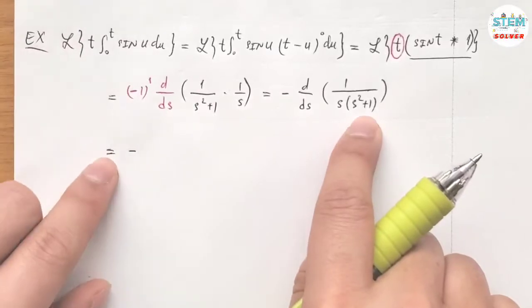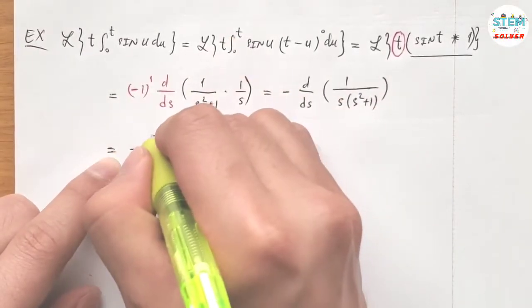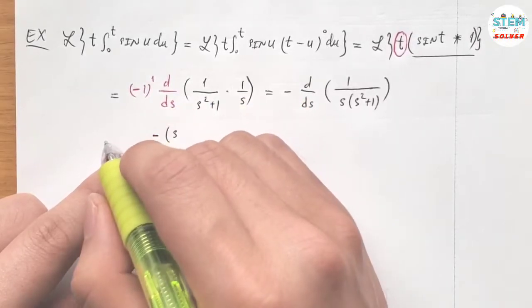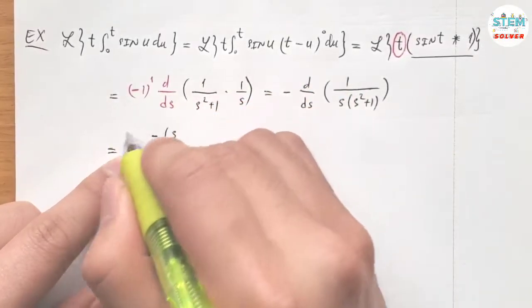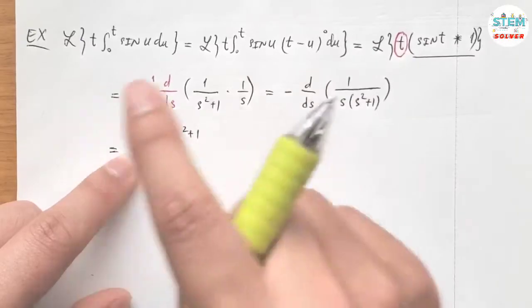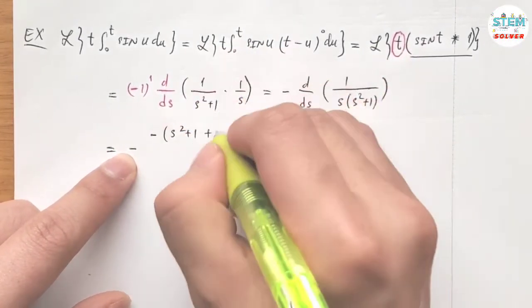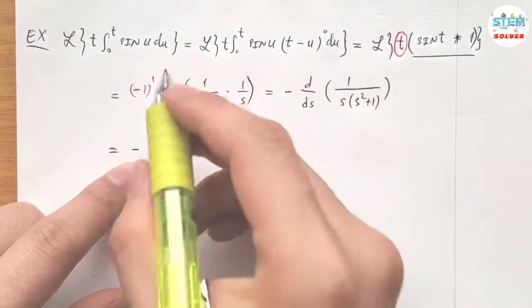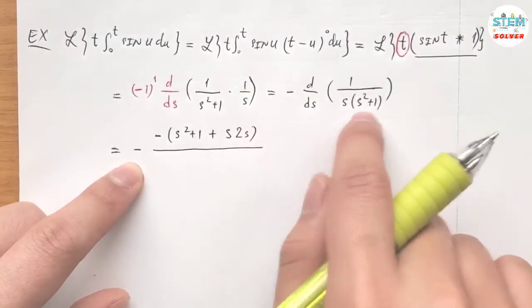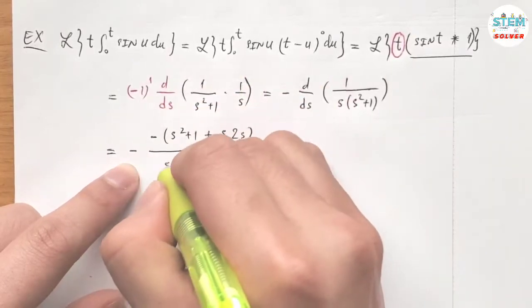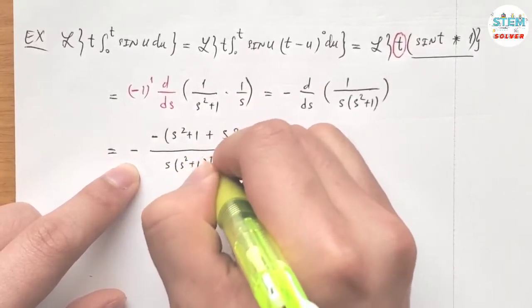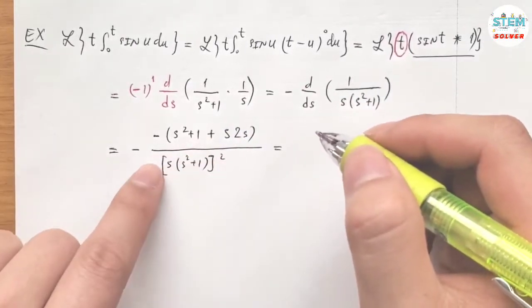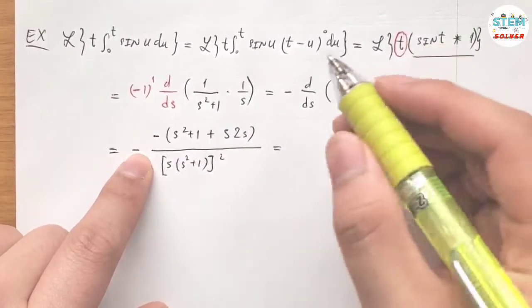So this is the derivative of the product. All of this divided by the bottom squared. Okay, now simplify this a little bit, so the negative times negative becomes positive.